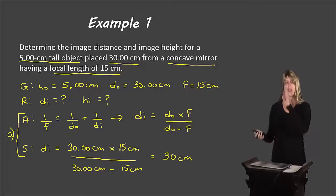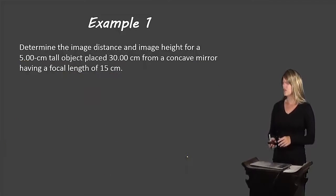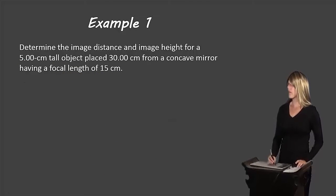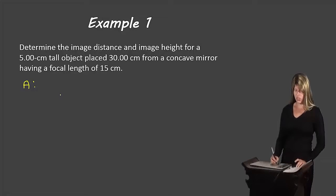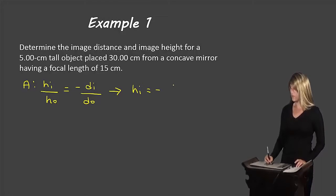Now switching to the next slide for Part B. We now have enough information to use the magnification equation. Using the version HI/HO = −DI/DO, we can rearrange that so that HI = (−DI × HO) / DO.